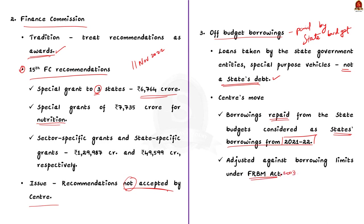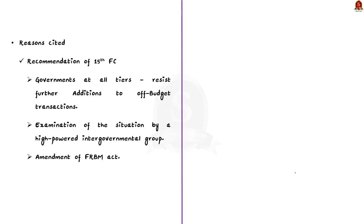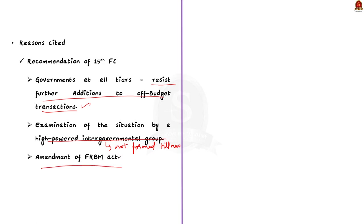This move restricts the financial autonomy of the states. The central government has indicated that this decision is based on the recommendation of the Finance Commission. However, the 15th Finance Commission did not explicitly recommend treating off-budget borrowings of states as the state's own debt. It recommended strict fiscal discipline and examination of the situation by a high-powered intergovernmental group to achieve debt sustainability, and suggested the FRBM Act may be amended as per that group's recommendations. But no such group has been appointed by the center so far, making this limitation on states unfair.